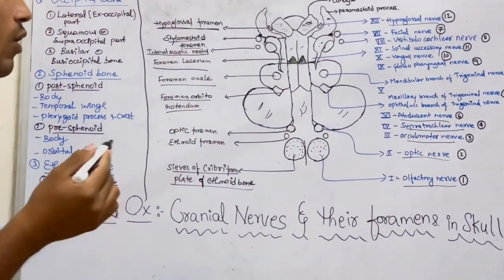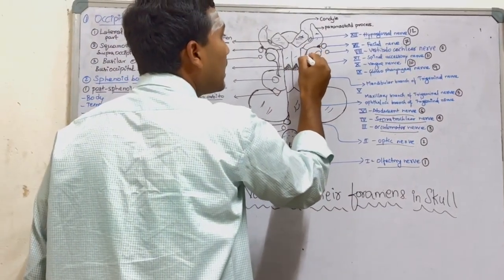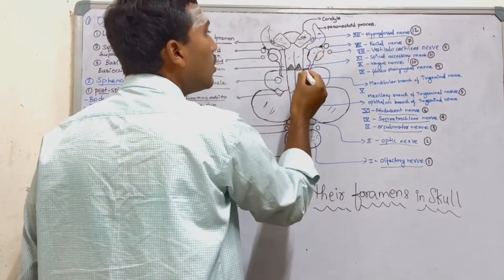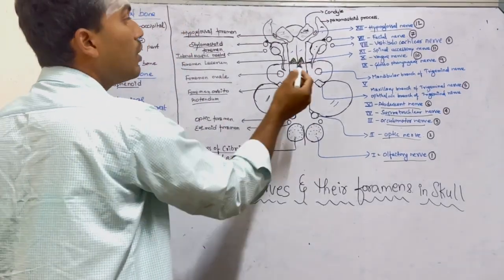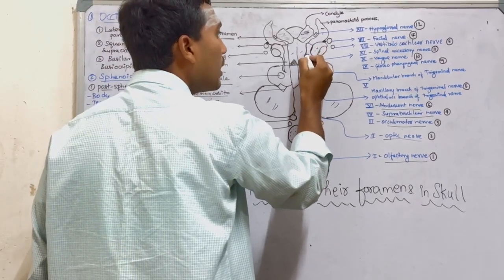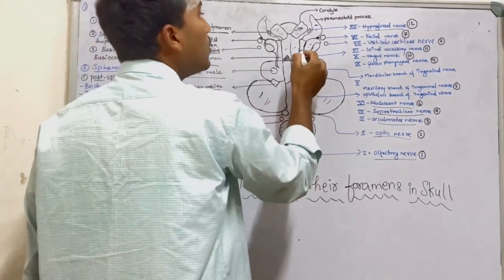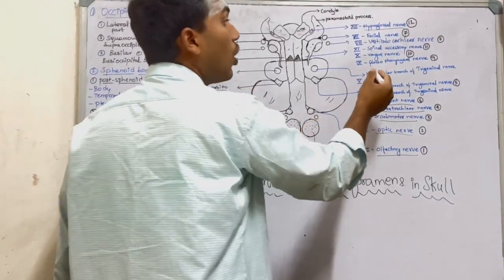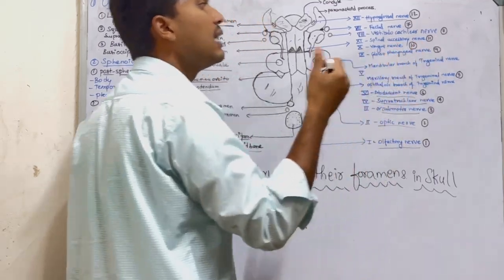This is also called the jugular foramen. The lateral boundary of the foramen is formed by the tympanic part; the anterior margin is formed by the posterior border of the temporal wing of the post-sphenoid bone; and the medial border is formed by the basi-occipital bone of the occipital bone. This forms the jugular foramen, through which the glossopharyngeal nerve, vagus nerve, and spinal accessory nerve arise.